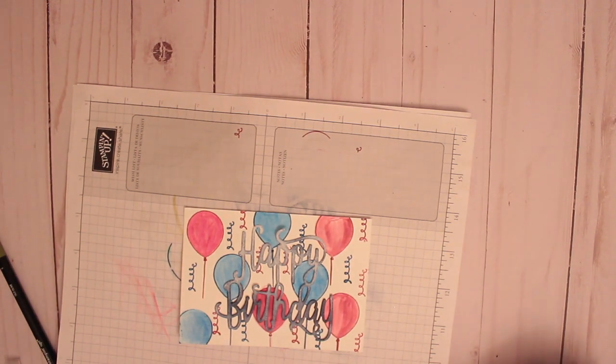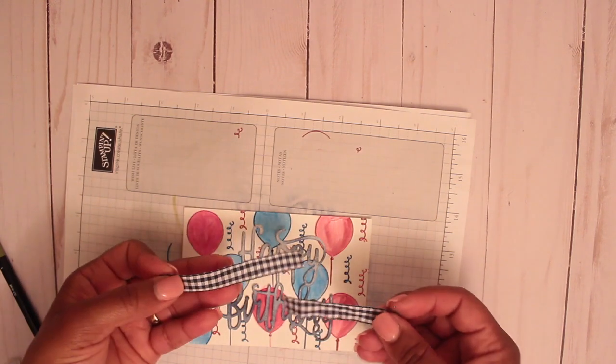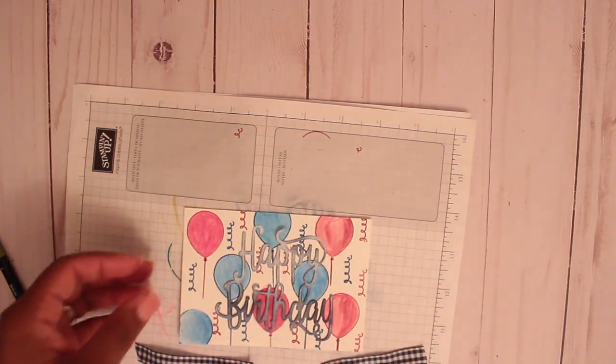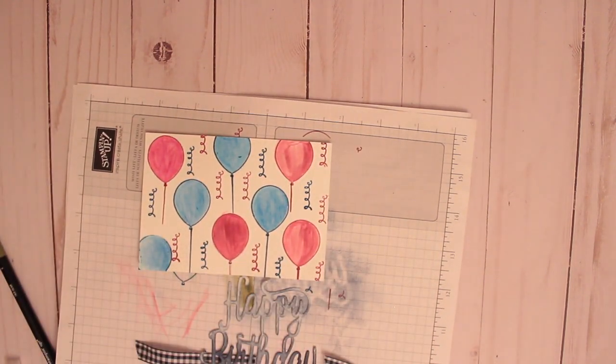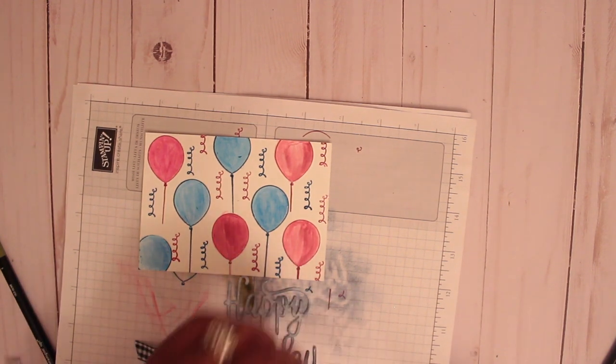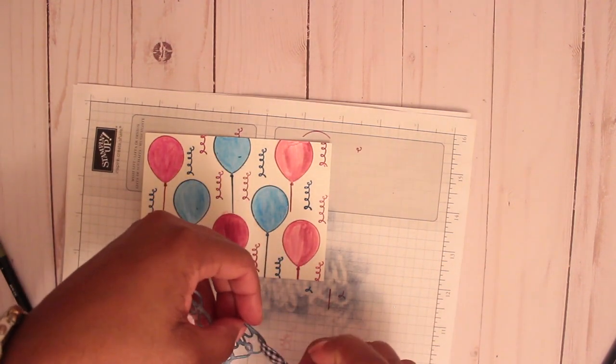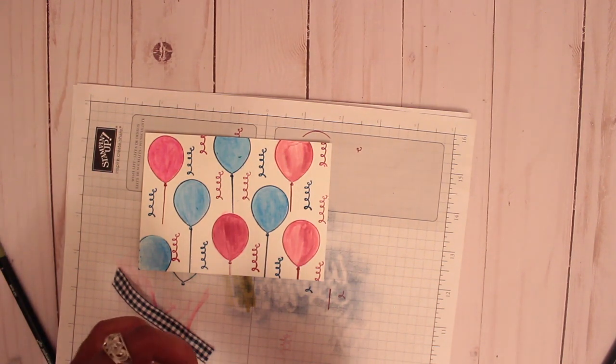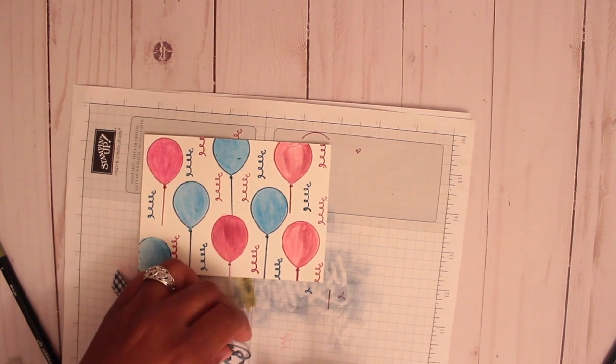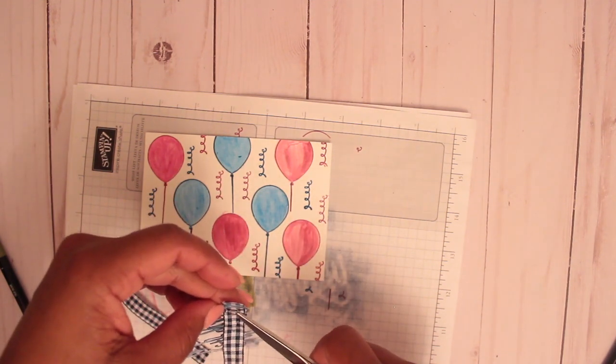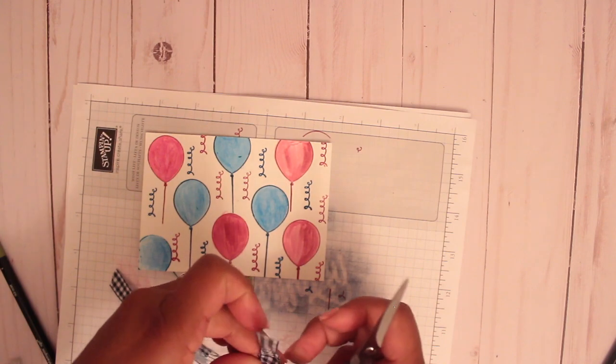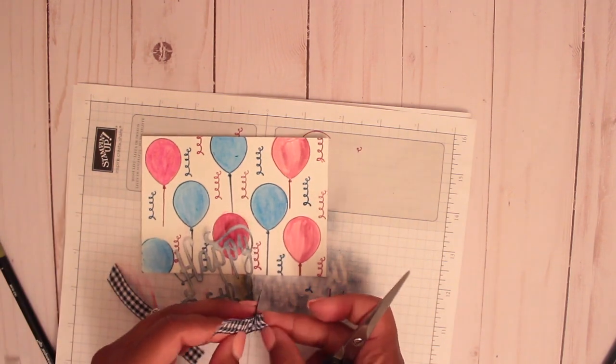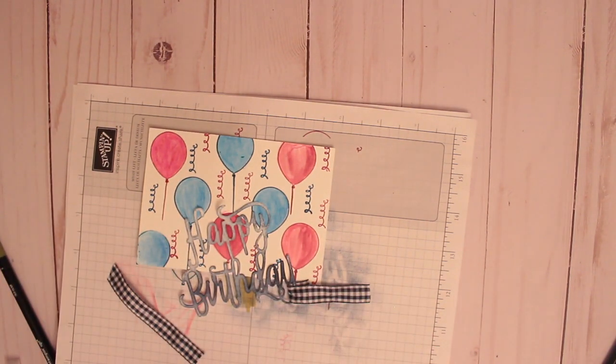For the birthday part, what I'm going to add is some ribbon to that. We have this gingham ribbon in Night of Navy and white. I'm going to get some glue dots. I'm just going to run this through the loop of the Y. Secure it with the glue dot. My glue dot is still on my scissors.